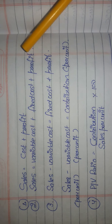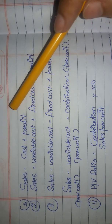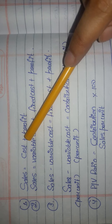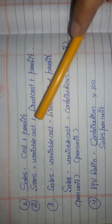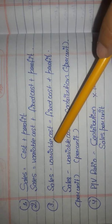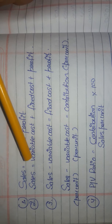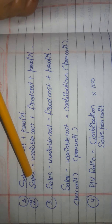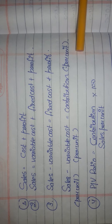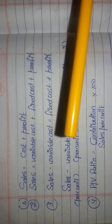We know that Sales = Cost + Profit. Cost can be of two types: variable cost and fixed cost. So Fixed Cost + Variable Cost + Profit = Sales. Rearranging: Sales − Variable Cost = Fixed Cost + Profit. Therefore, Sales minus Variable Cost is also called contribution.